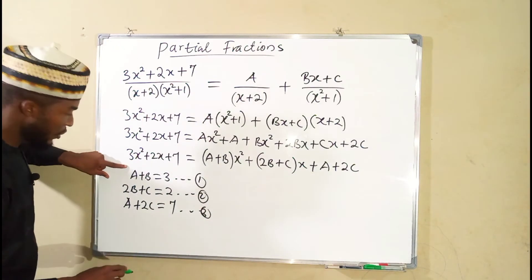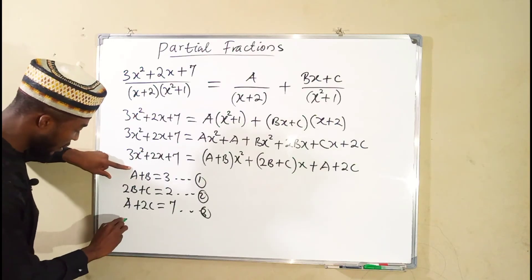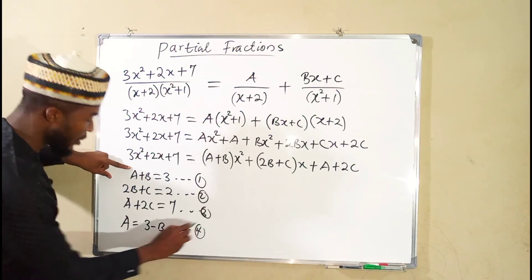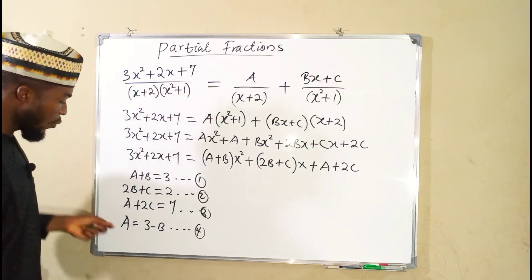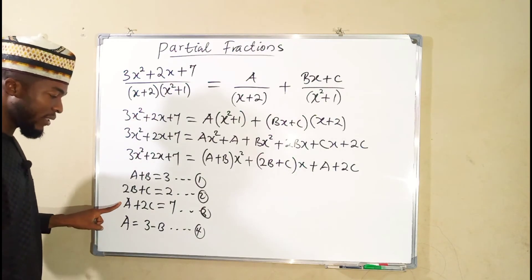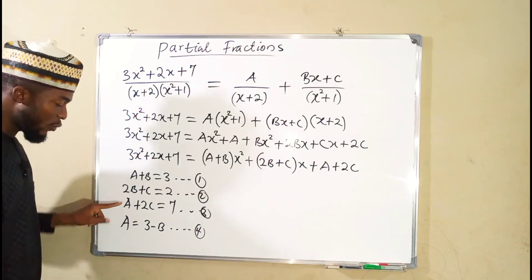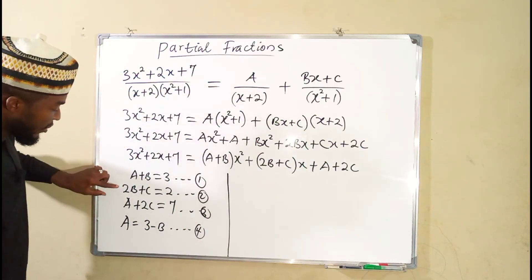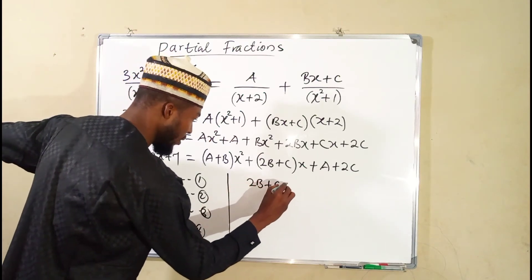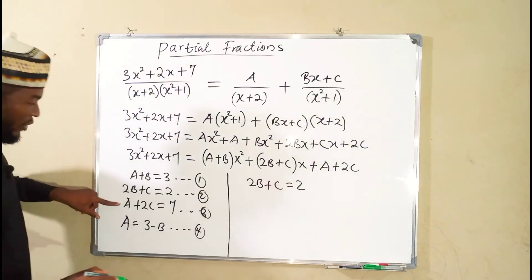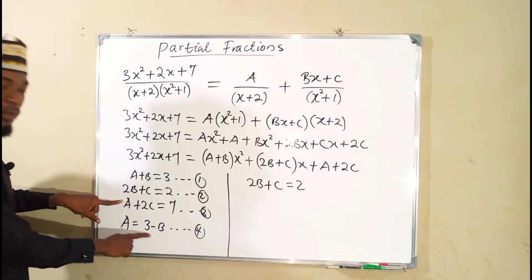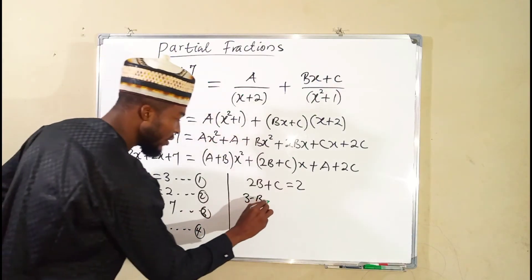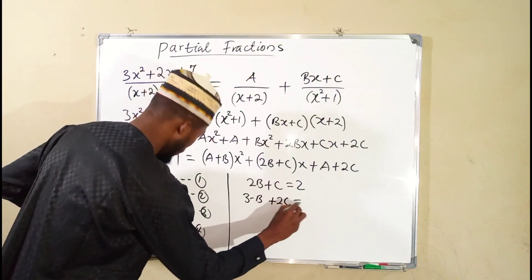Let me name them as equation 1, equation 2, and equation 3. From equation 1, we can make a the subject: a equals 3 minus b. We can name this as equation 4. We can plug this into equation 3 — wherever we see a, we replace it by 3 minus b. So from equation 3, substituting gives us 3 minus b plus 2c equals 7.